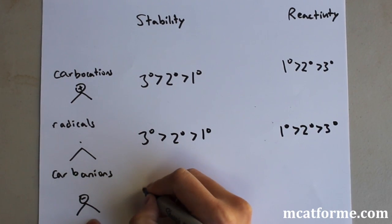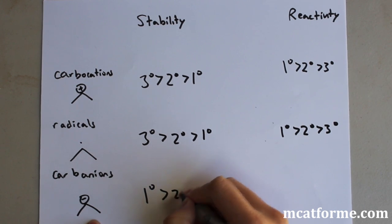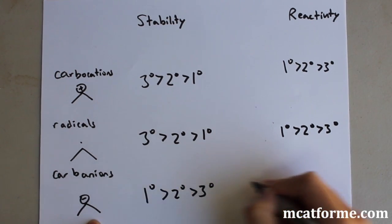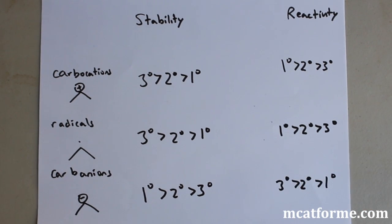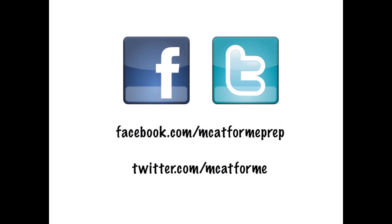Carbanions are going to have the opposite from the two above. So this is something you just have to memorize. You can kind of piece it together in your mind if you have some type of trend that you can remember, but this is more just a memorizing thing, though it's pretty simple. The carbocations and radicals act similarly together. Carbanions work oppositely.